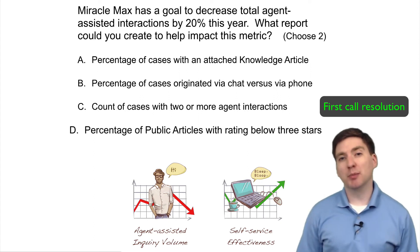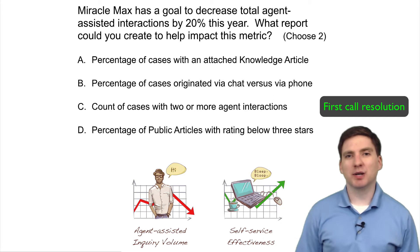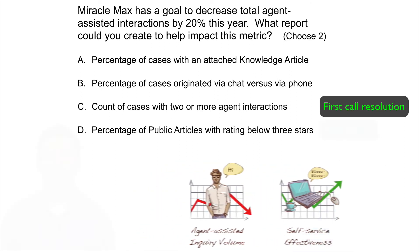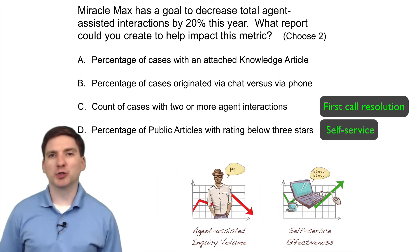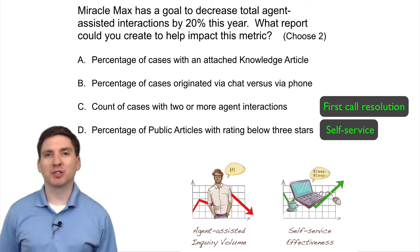D, percentage of public articles with a rating below three stars, provides an indication of the public knowledge base quality. One of the most effective ways to reduce unnecessary agent interactions is to have an effective self-service knowledge base. Articles getting rated one or two stars are not solving customer issues, so improving the average star rating over time should correlate to a decrease in agent-assisted interactions.